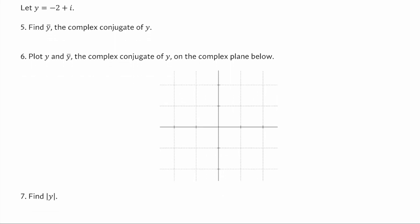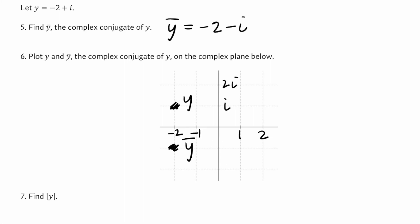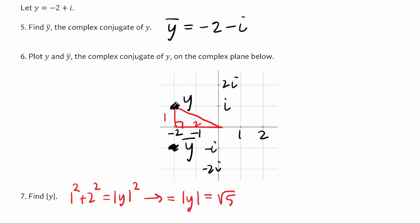The next few go off of this y equals negative 2 plus i number. Y-bar, the conjugate of y, is just where we take the number against the i and make it negative, so negative 2 minus i. We're going to plot y and y-bar: negative 2 plus i is y, and negative 2 minus i is y-bar on the complex plane. The length of y, or the absolute value of y, is this distance from 0. We turn it into a right triangle problem — it has a length of 1 and a length of 2 — so 1 squared plus 2 squared equals the length of y squared. 1 plus 4 is 5, so the length of y is going to be the square root of 5.